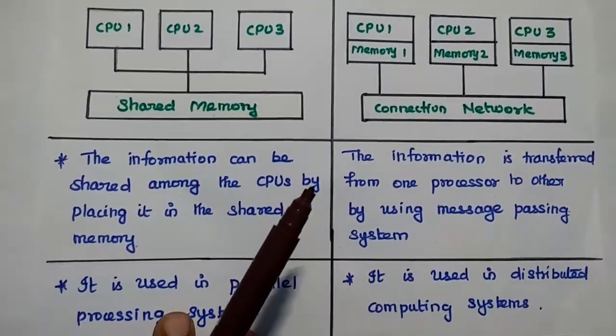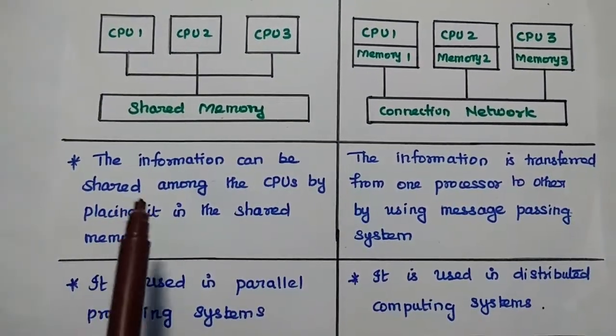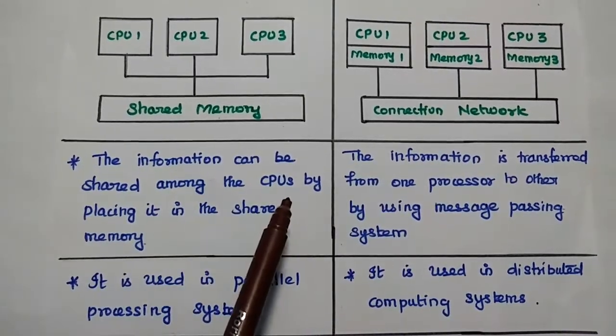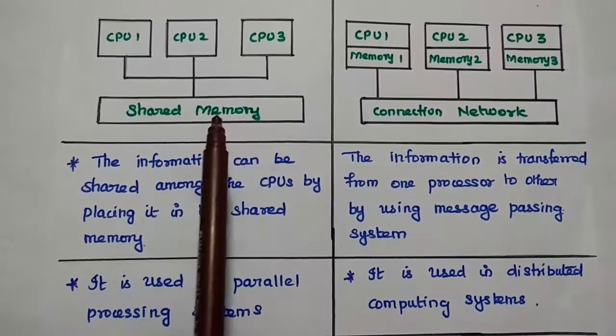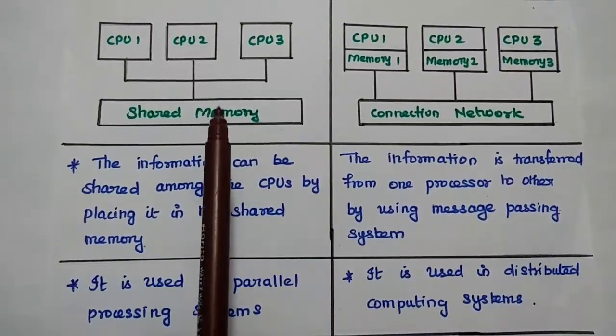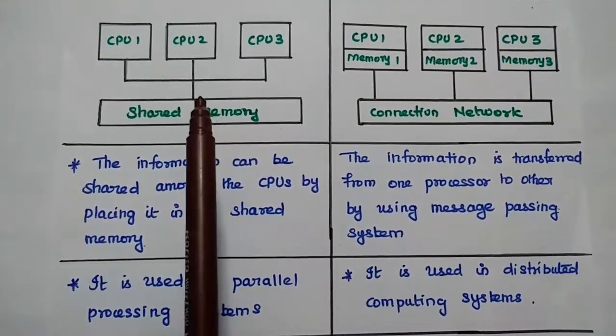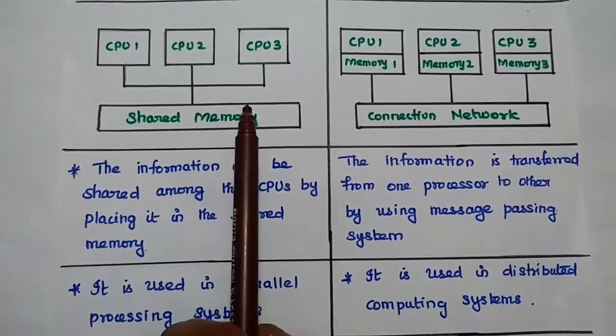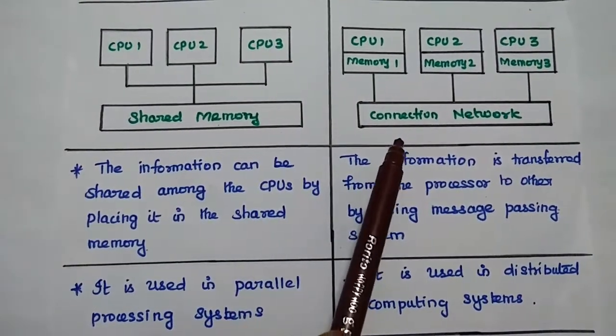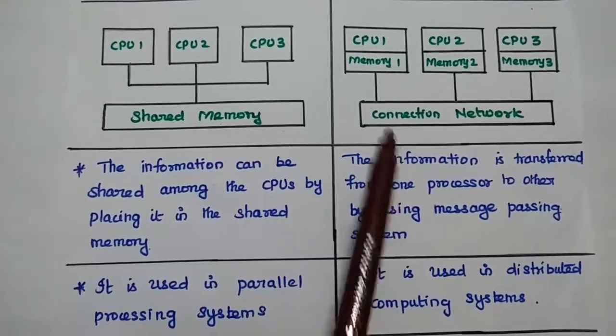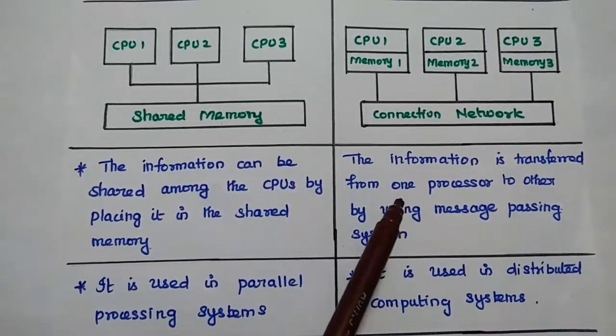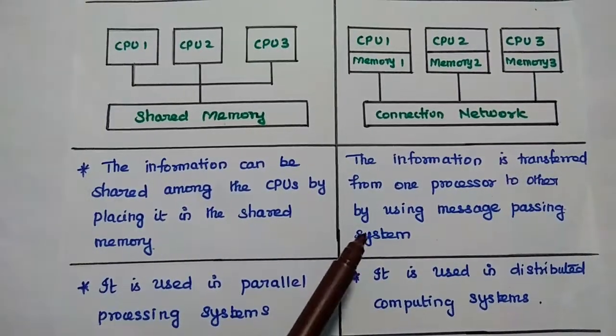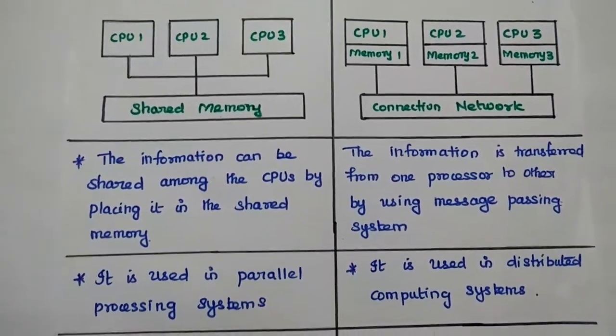So the next one is in this tightly coupled system, the information can be shared among the CPUs by placing it in the shared memory. So we can place the information in this common memory that can be shared between the modules, the CPUs. But here in this loosely coupled system, the information is transferred from one processor to another processor by using message passing system.